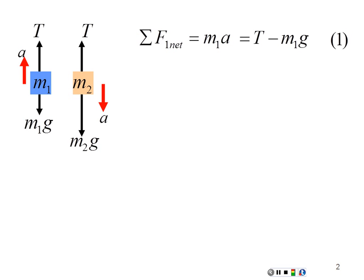For the other free body diagram of mass 2, my acceleration is down, so that is my positive direction. The net force on mass 2 equals M2A, and that should equal all the external forces in the direction of acceleration — the positive direction being down. So that's going to be M2G minus tension — the net force in the down direction. That is my second equation.